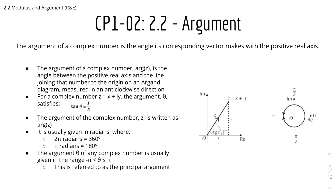And here we have argument. The argument of a complex number is the angle its corresponding vector makes with the positive real axis. The argument of a complex number, denoted as arg z, is the angle between the positive real axis and the line joining that number to the origin on an Argand diagram. It is measured in the anticlockwise direction. For a complex number z equals x plus iy, the argument theta satisfies tan theta equals y over x.